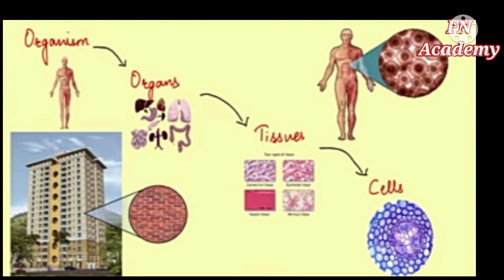So we can say that the human body is composed of many cells. Just as bricks form the important part of a building, cells make up an organism. So we can say that cells are the basic fundamental unit of life.